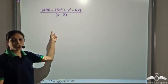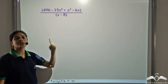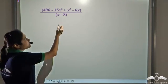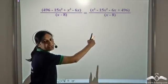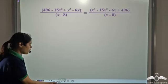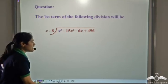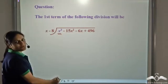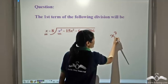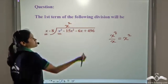Now let us divide two more expressions. We first need to arrange the terms in the decreasing order of the power of the variable: x cubed first, then x squared, then x, then the constant term. Now we write it in division form and divide x cubed by x to get the first term of the quotient, which is x squared.